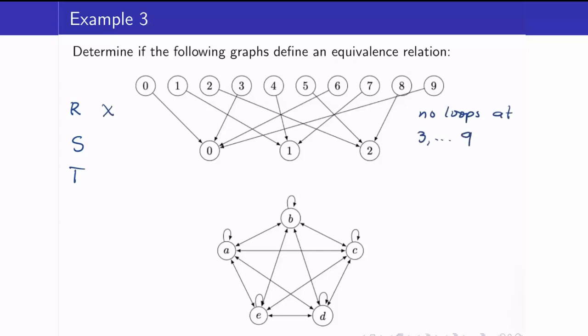Next, is it symmetric? If we look at (3,0), but we do not have (0,3). Therefore, this is also not symmetric. I will leave checking transitivity as an exercise. We have already shown that it is not reflexive and not symmetric, so therefore this is not an equivalence relation.